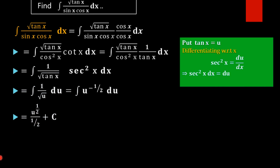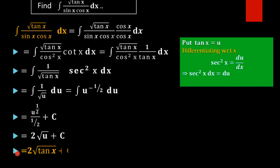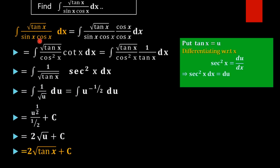u raised to half is root u, and 1 divided by 1/2 becomes 2. So the value of the integral is 2 root u plus C. Since u equals tan x, root u is root tan x. Therefore the value of the integral of square root of tan x divided by sin x into cos x dx equals 2 into square root of tan x plus C.